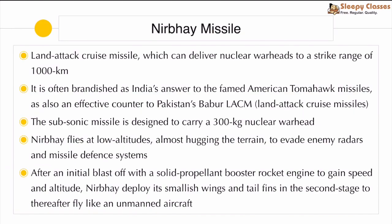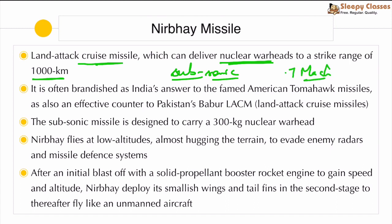Moving to GS3, the Nirbhay missile is a land attack cruise missile that can also deliver nuclear warheads up to a range of 1000 km. It is a subsonic cruise missile with a speed of Mach 0.7. It is brandished as India's answer to America's famous Tomahawk missile, which is also a subsonic missile. It is also a counter to Pakistan's LACM — land attack cruise missile.